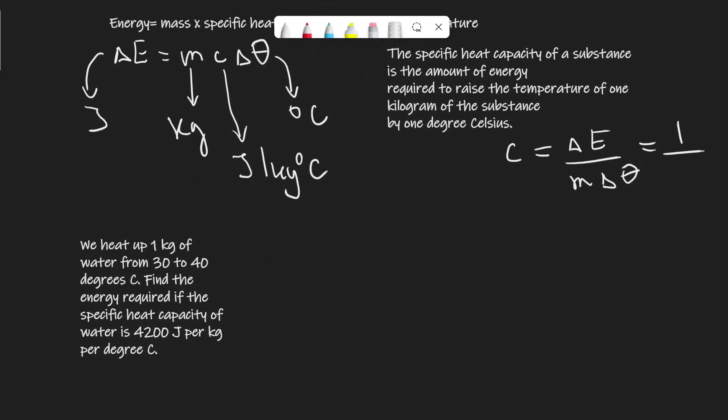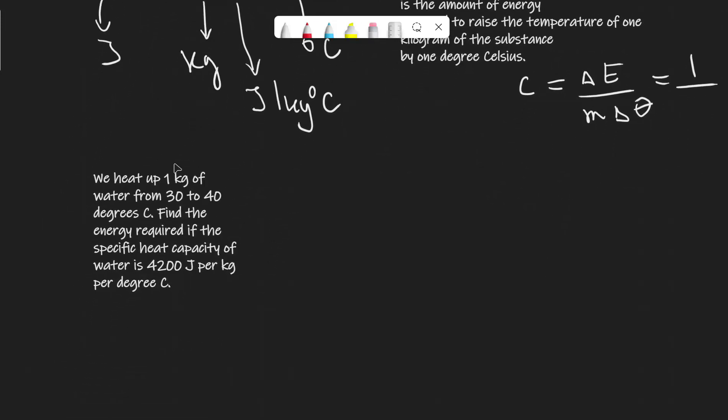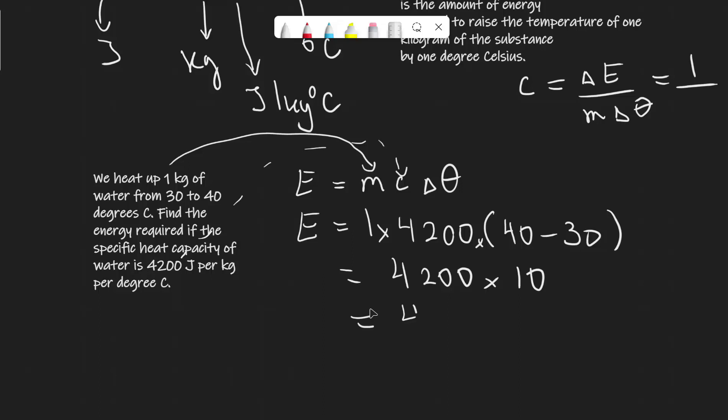Now, let's do a little simple problem. We heat up one kilogram of water from 30 to 40 degrees C, and we need to find the energy required, given the specific heat capacity of water is 4,200 joules per kilogram per degree. Well, our formula is that energy is equal to mcΔθ, so the energy will be equal to one kilogram times 4,200. The change of temperature will be equal to 40 take away 30, which is equal to 4,200 multiplied by 10, which overall will just give us 42,000 joules.